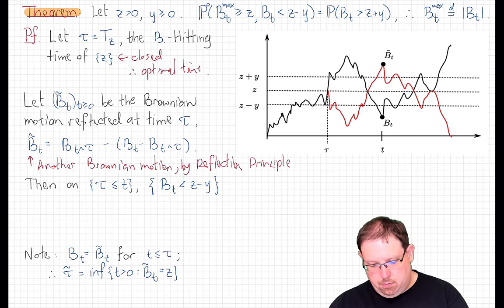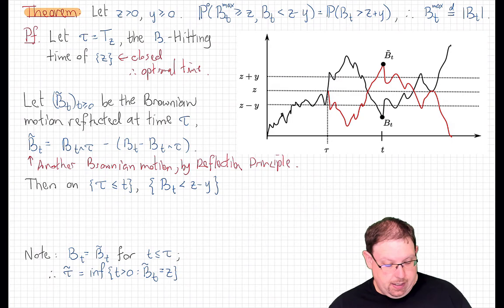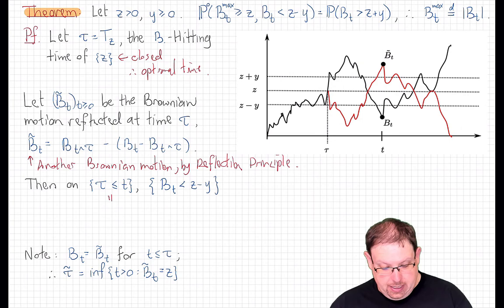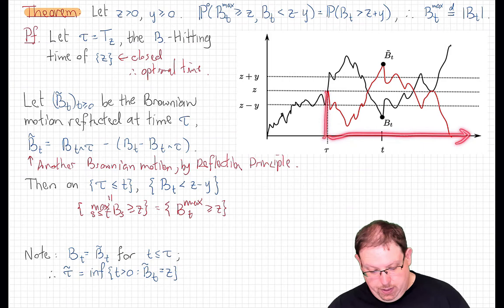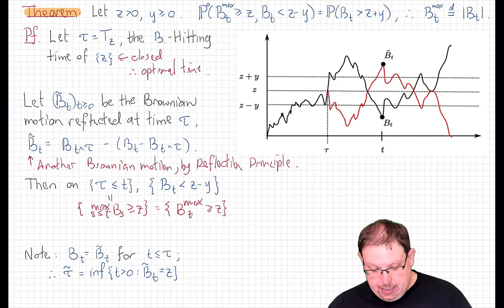Now let's consider the event that the hitting time tau is less than or equal to t. That means exactly that the Brownian motion hits height z by time t — in other words, this is exactly the event that the running maximum of Brownian motion up to time t is at least z. On that event, the event that Brownian motion at time t is below z minus y, just doing the reflection, is exactly the same as the event that the reflected Brownian motion b̃t is bigger than z plus y.